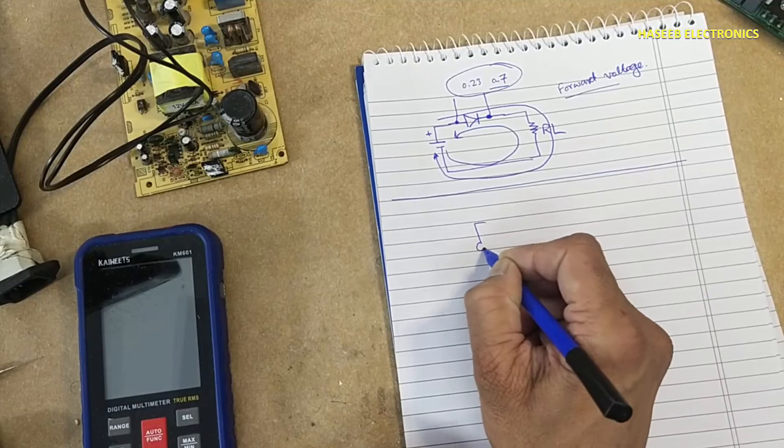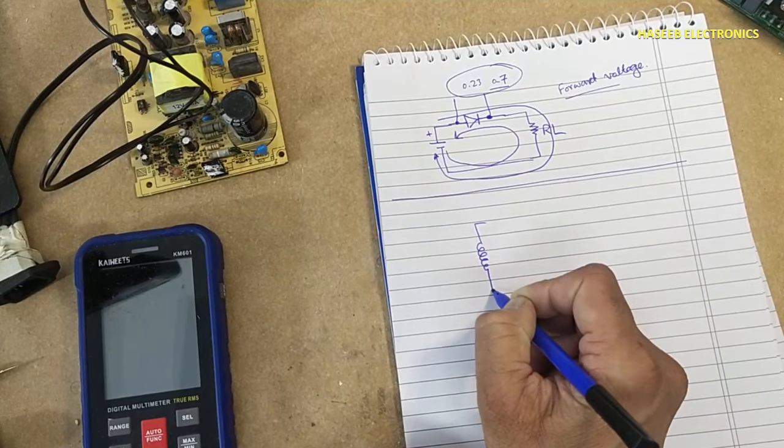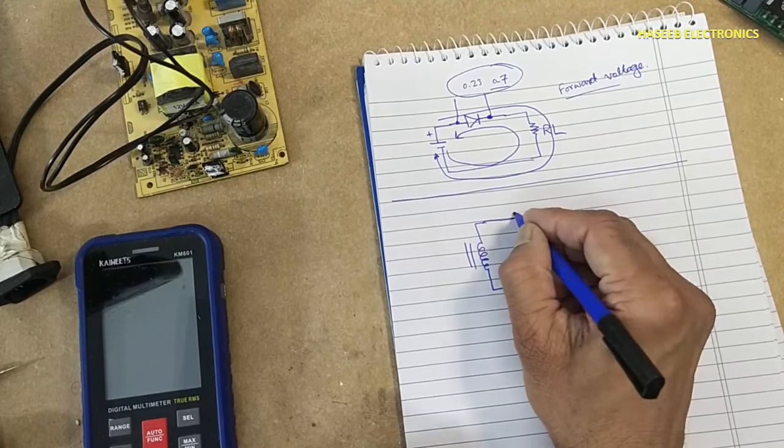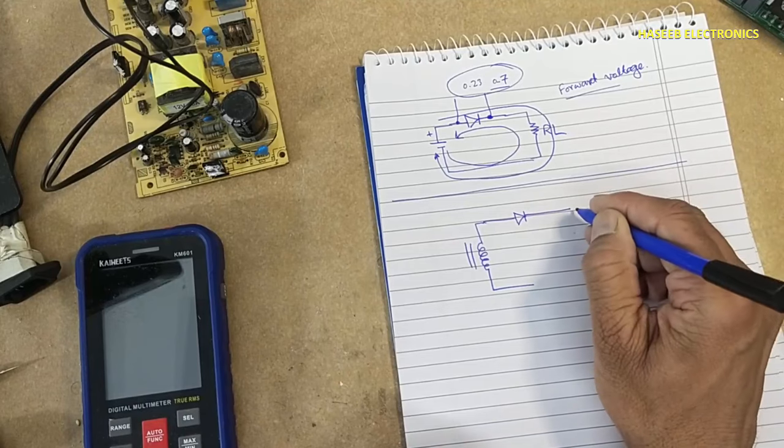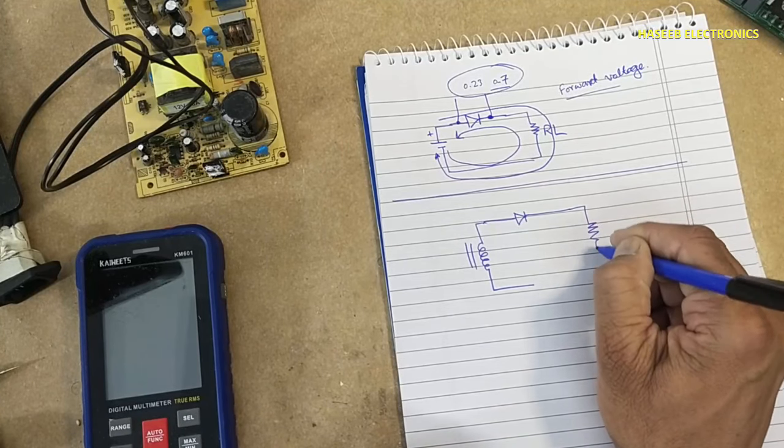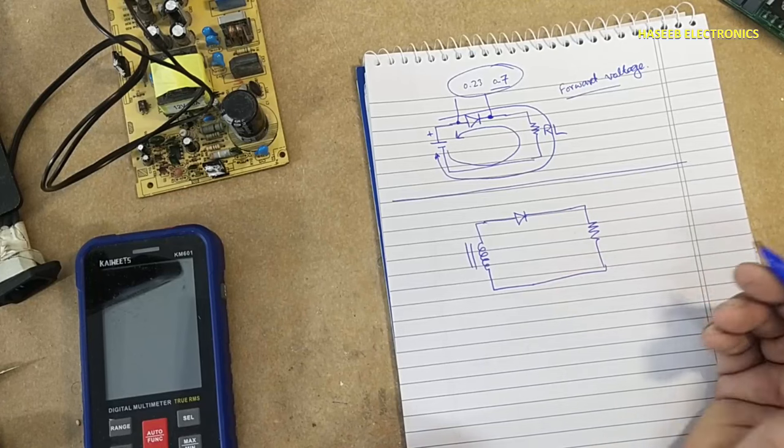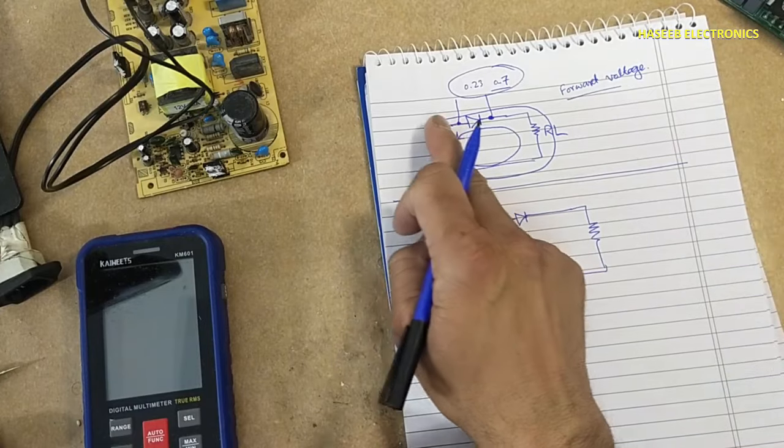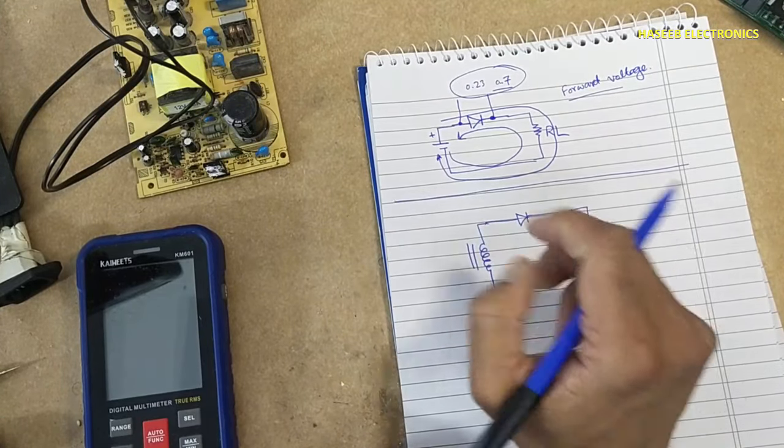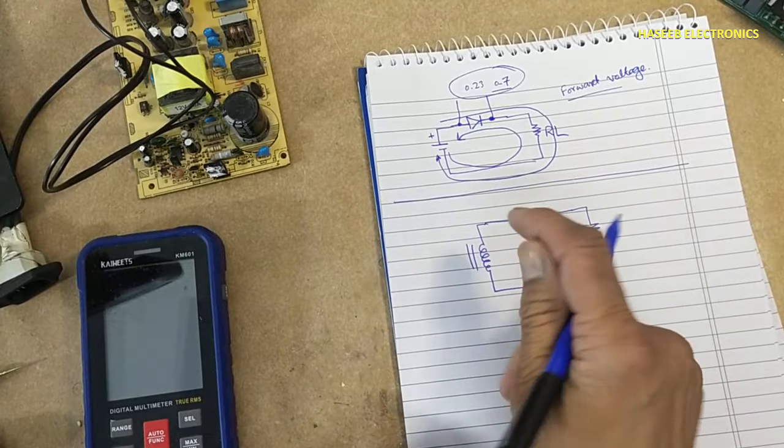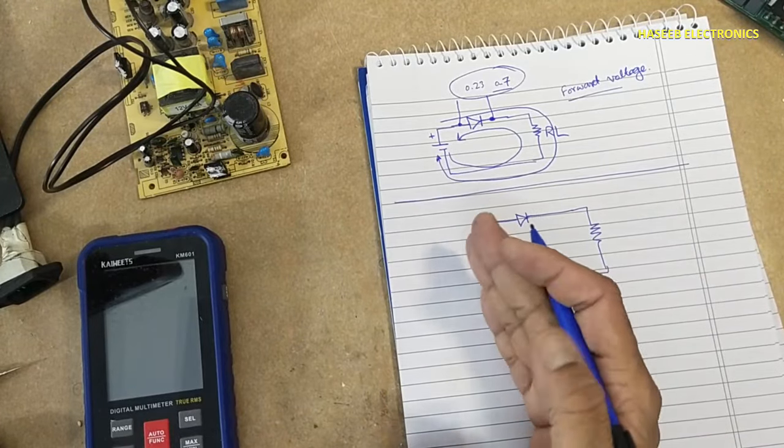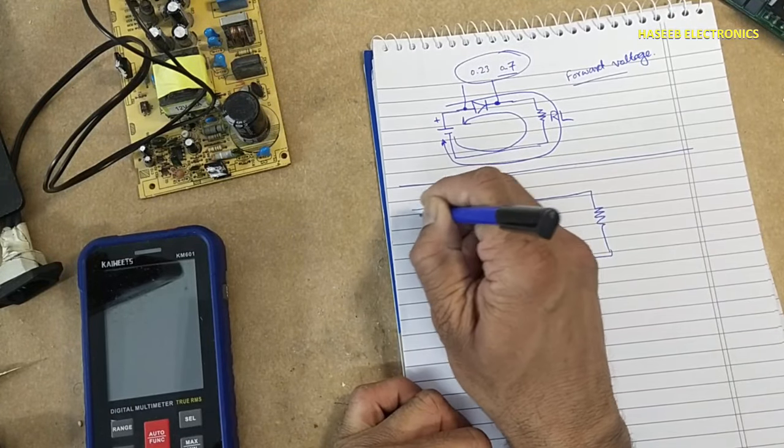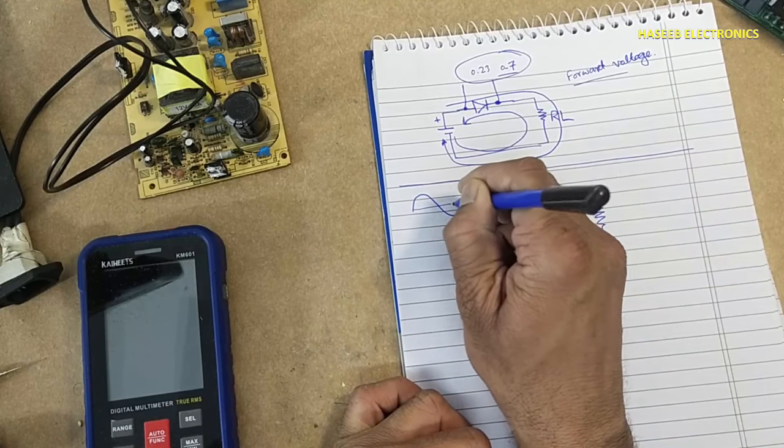Any transformer, anything when we connect here with any RL, now the story will change. Here is just only one direction current because it is DC current. But in this situation when there is transformer action, at that time there are two types of voltage.